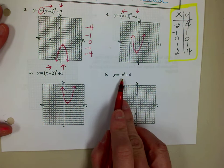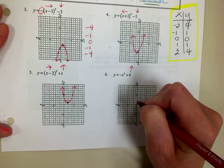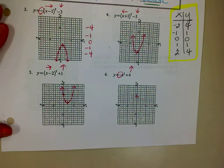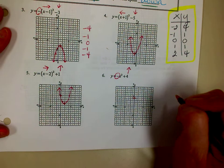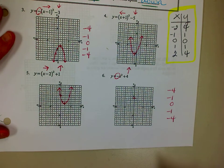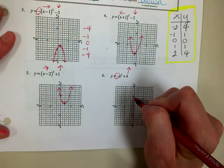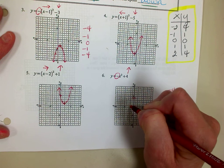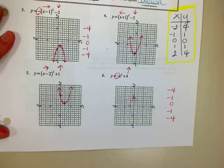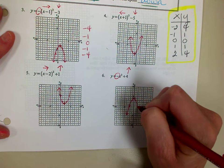Number 6. I don't have a number inside parentheses this time, so I'm not going to go left or right. But this plus 4 does mean I'm going to go up 4 — there is the new origin. And I do have a negative, so the y values are going to change to their opposite sign. The x's stay the same but the y's change to their opposite. So: to the left 2, down 4; to the left 1, down 1; then 0, 0; to the right 1, down 1; to the right 2, down 4. It's going to be upside down because of the negative out in front.